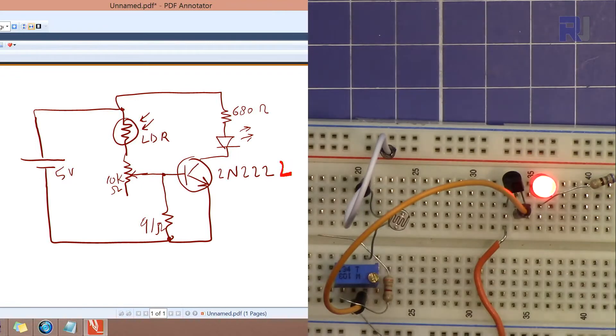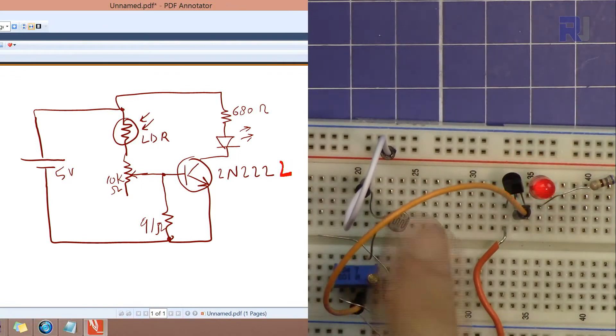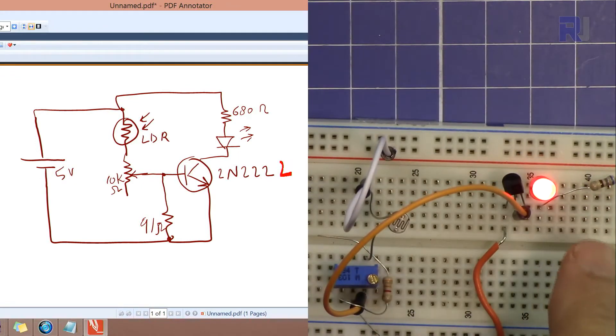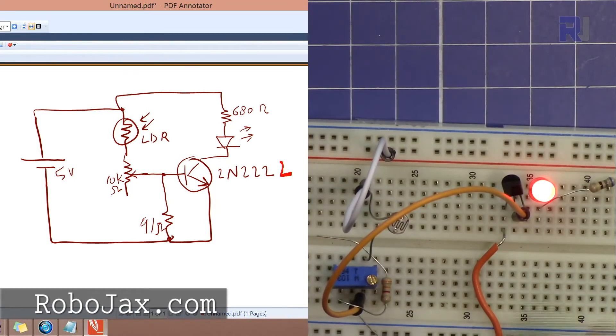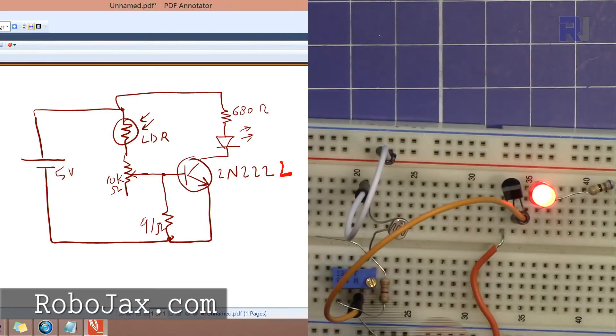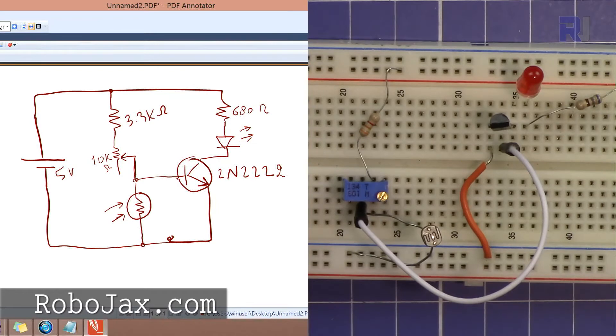This can be connected to a relay that can turn on a motor or something, or a shaft, or a robotic arm to do something. So this is one way that you can control a switch with LDR.